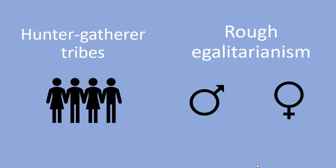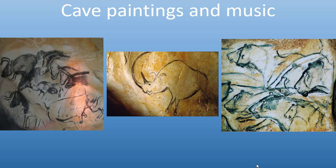We believe these bands of hunter-gatherers were largely egalitarian, meaning social classes did not exist and there was a rough equality between individual members. We also believe that genders were relatively equal — both men and women played a role in raising children and participated in hunting and gathering. We also have evidence of the culture of early humans. Images from Chauvet Cave in France are estimated to be nearly 35,000 years old, clearly showing artistic skill in depictions of animals like horses and rhinos. Caves in Germany have also produced musical instruments made out of animal bones.